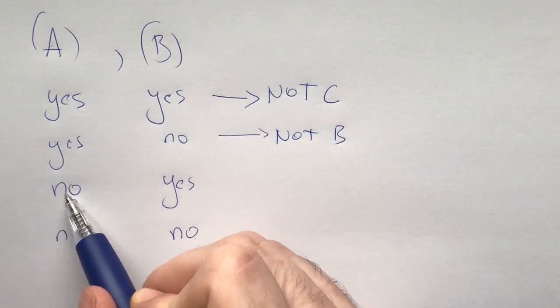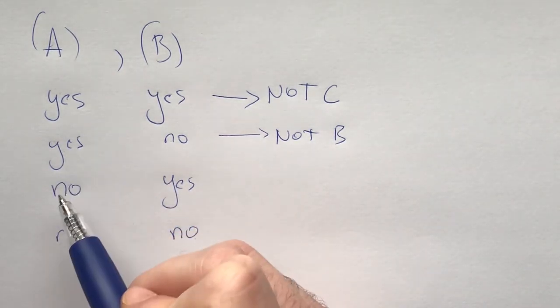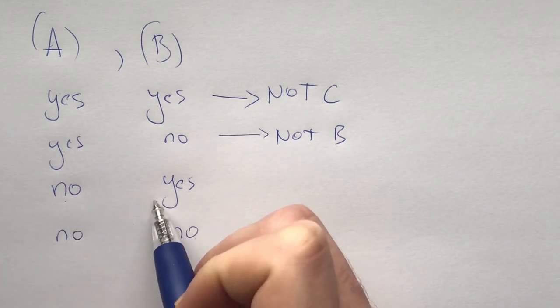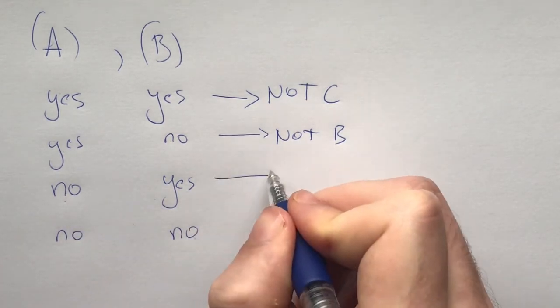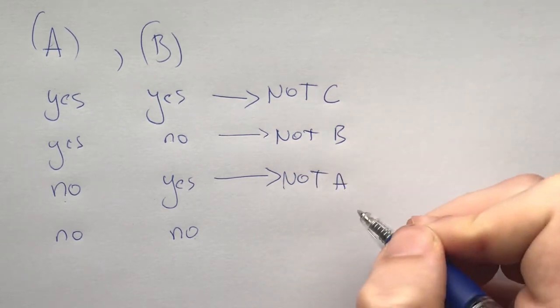Now what about this case? Well, if apple was his favorite, then he lied both here and here, which he can't do. So now we know apple is not his favorite fruit.